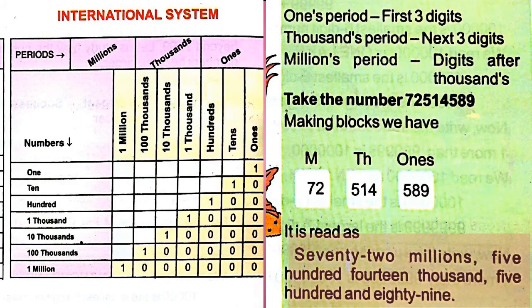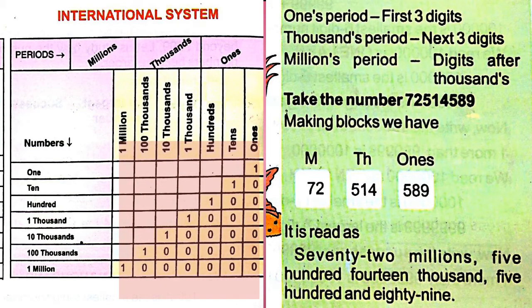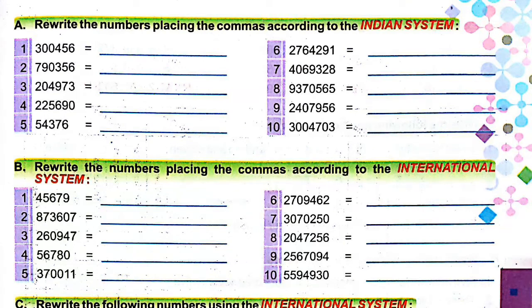Seventy-two million, five hundred fourteen thousand, five hundred eighty-nine. The place values of the columns are just like in the Indian system: ones place value is one, tens place is ten, hundreds place value is one hundred, thousands place value is one thousand, and so on.